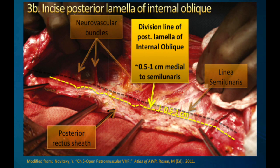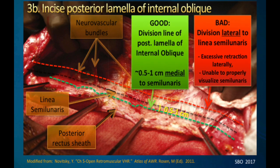To continue on with the TAR dissection, you're going to complete your retrorectus dissection, identify your linea semilunaris, and start your division line about half a centimeter to one centimeter medial to the linea semilunaris. This slide shows the green line — medial to the semilunar line — versus the red line which is lateral. The green line isn't a perfectly straight line; it's a little curved around the neurovascular bundles, and that's okay. Take the time to dissect around those neurovascular bundles to preserve them during your dissection.